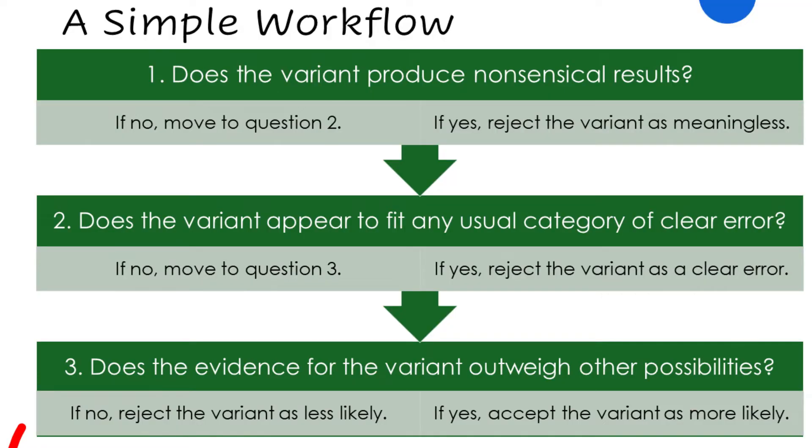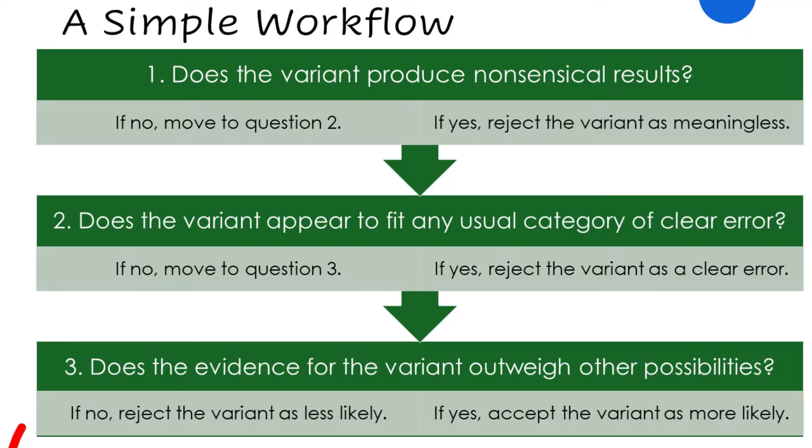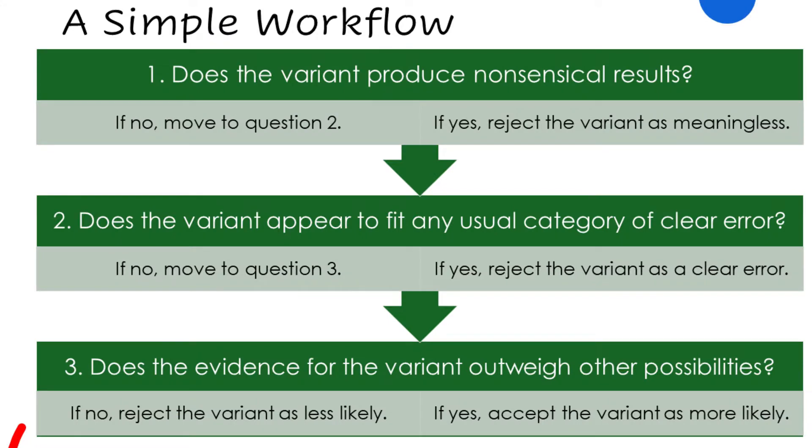If the answer to question one is no, we move to question number two: does the variant appear to fit any usual category of clear error? Sometimes we'll be able to say — clear haplography, clear dittography, or clearly this person took a difficult doctrinal text and smoothed it out. If yes, reject the variant as a clear error. If not, we drop to question number three: does the evidence for the variant outweigh other possibilities? This is where we have to weigh evidence, and this can be difficult.